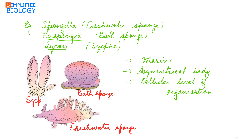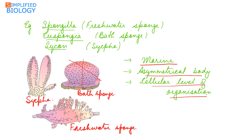Coming to the characteristics of Phylum Porifera: most sponges are marine. They have an asymmetrical body, meaning the body cannot be divided into two equal halves at any plane. They have a cellular level of organization, meaning they are made up of cells that carry out various functions but do not further form tissues or organs.